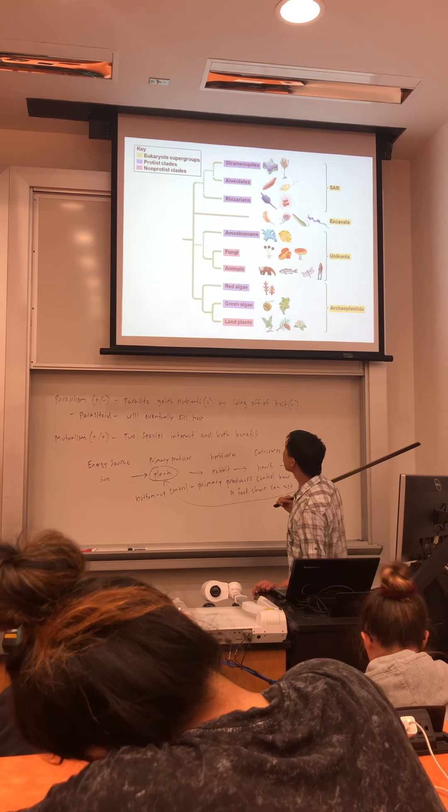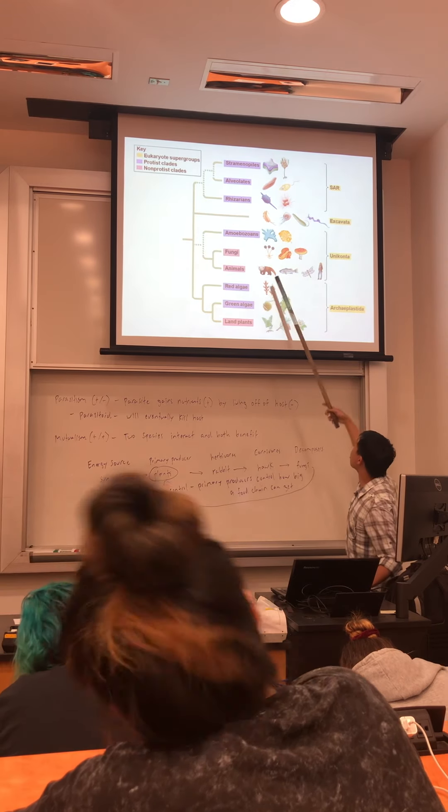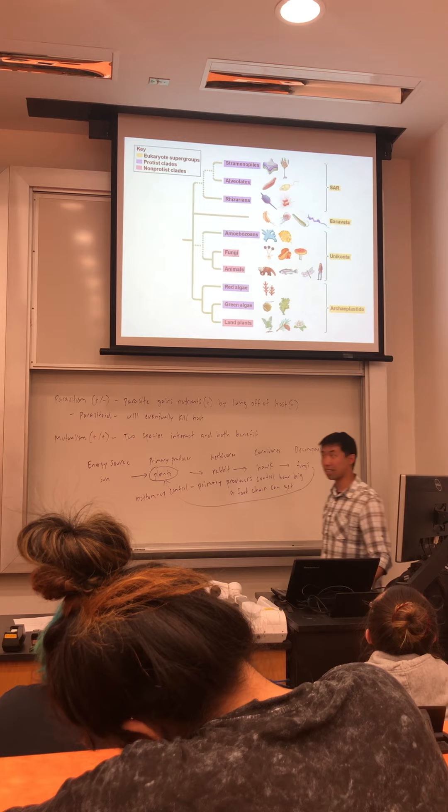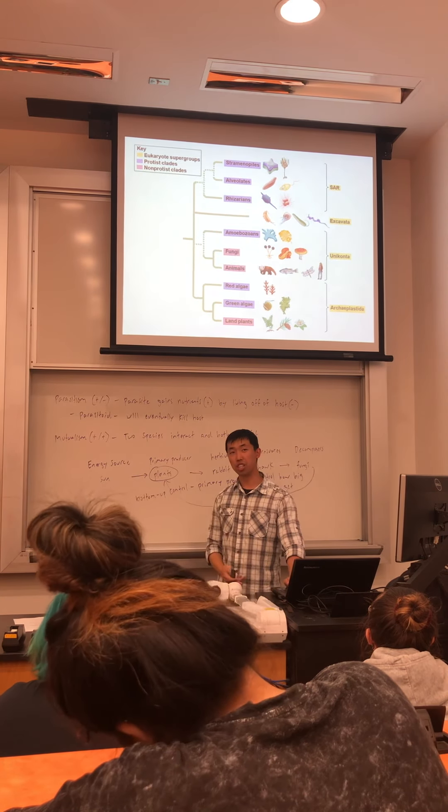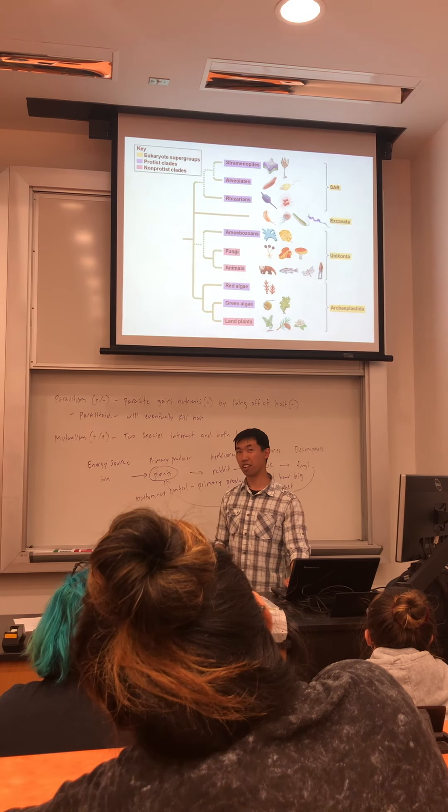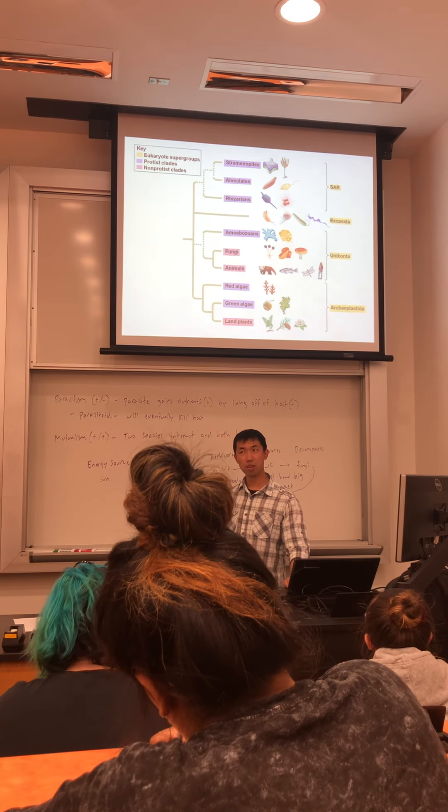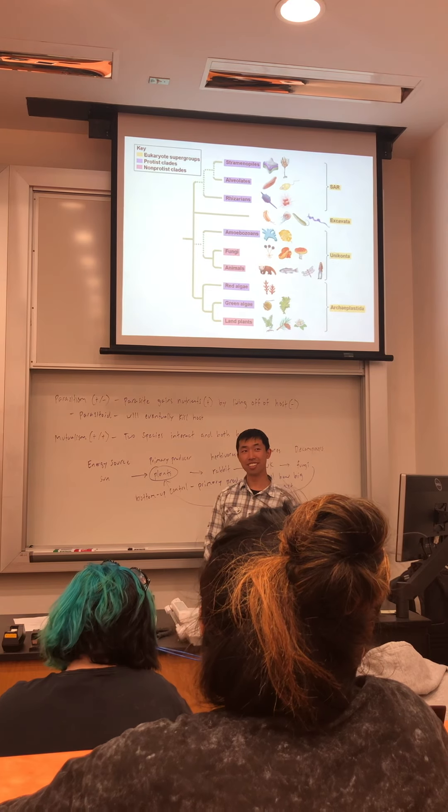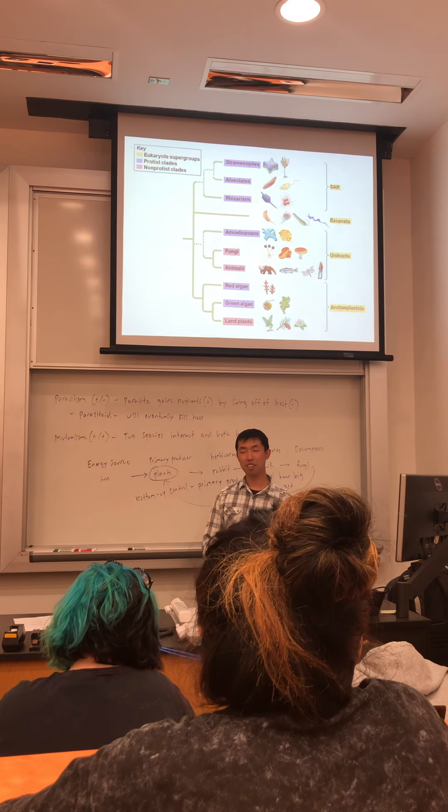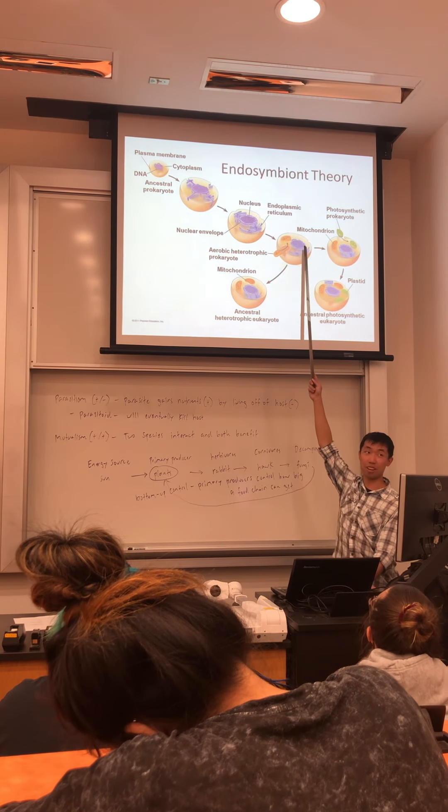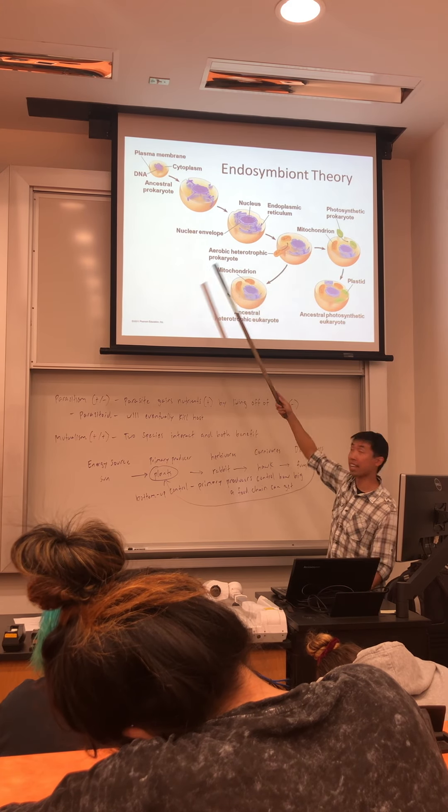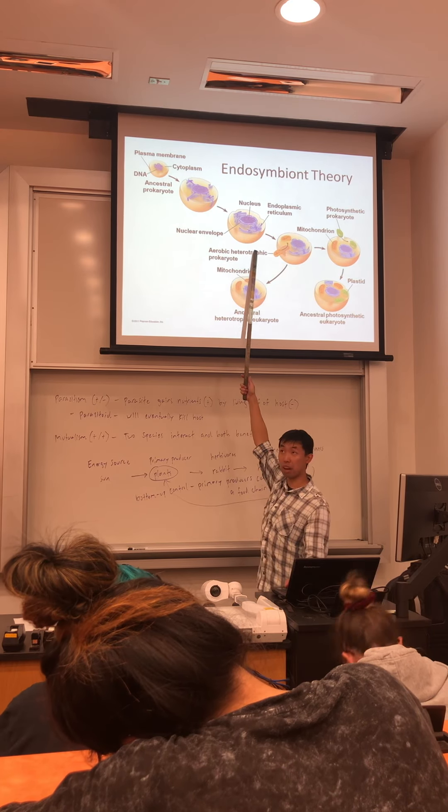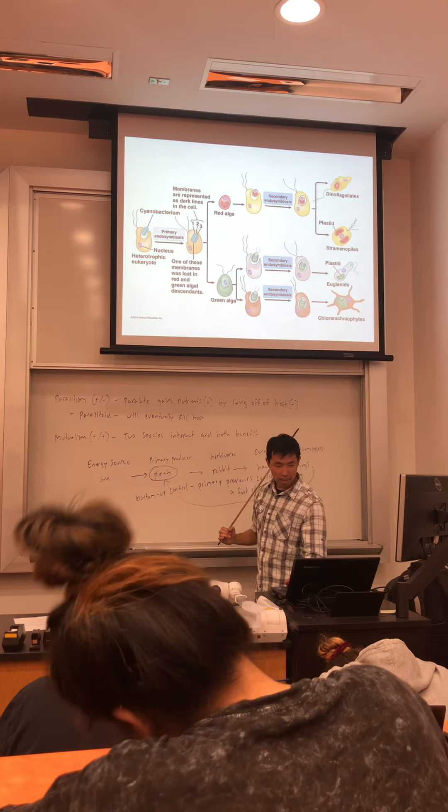Moving on to the eukaryotes. You should know the general key characteristics of all the categories that we talked about, like the SAR clade, the excavata, the unikonts, and the archaeoplastids. Know which members belong to what group. Also, know what was likely the origin of the eukaryotes. I can guarantee you there's a multiple choice question on that. Are you talking about when they take in the organelle? Yes, what is that called? Endosymbiosis or endosymbiotic theory. This is when a prokaryotic organism engulfs another one, and then eventually gets these membrane-bound organelles. That was likely the origin of the eukaryotes.